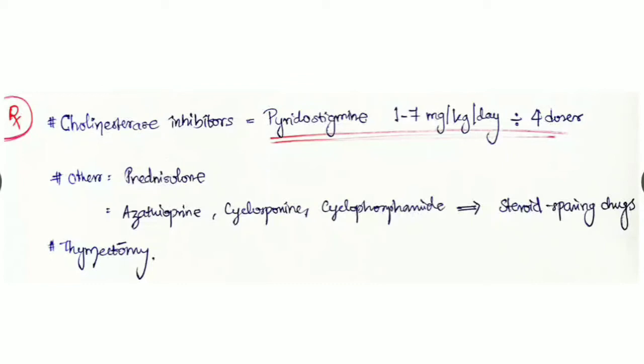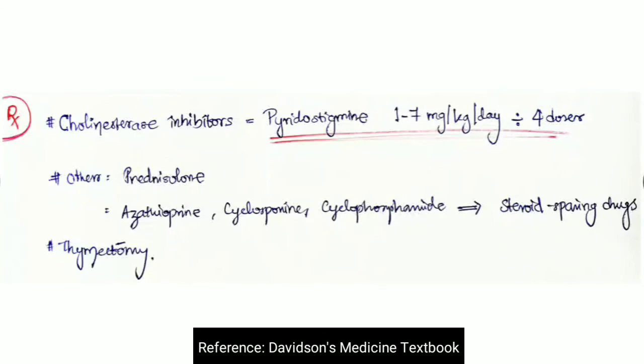Other options are prednisone-like steroids, which are immunosuppressants that decrease autoantibodies. Steroid-sparing drugs include azathioprine, cyclosporine, and cyclophosphamide. Another option is thymectomy. The thymus in children is the center of maturation of these autoantibodies. By removing the thymus, we reduce the quantity of autoantibodies circulating in the body and improve the disease.